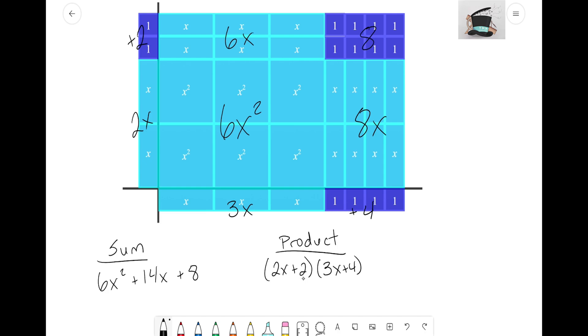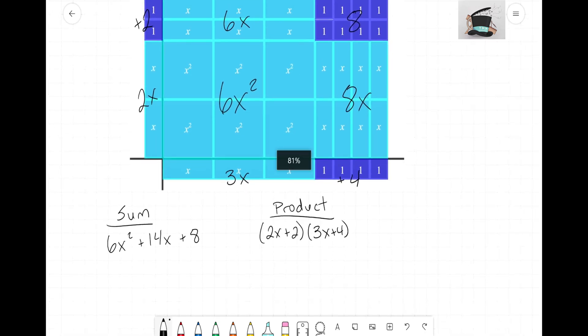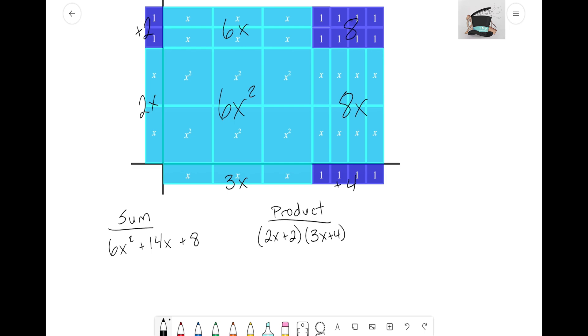And let's recap just so we can remember that the sum and the product they are equal. Those are just two different ways of representing the same set of algebra tiles. You can either count up the middle pieces that you started with or you can find out the side lengths that make up that rectangle to form the product. Either way, those two expressions are equal to each other.